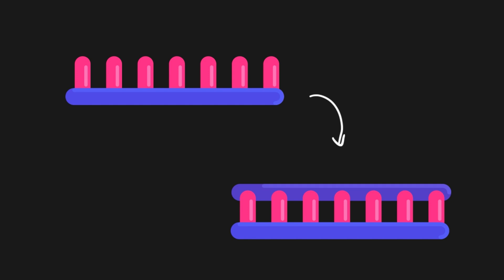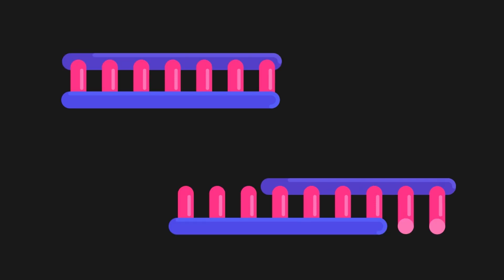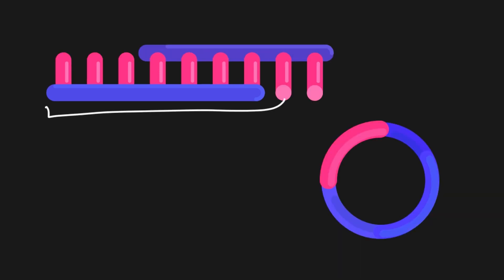After the initial cDNA is generated, DNA polymerase adds the complementary strand to form double-stranded DNA. From there, the cDNA is amplified using PCR, ensuring there will be enough to use in gene manipulation studies. Finally, restriction enzymes are added to generate sticky ends, and the cDNA is then ligated into a vector, which can be added to a cell.